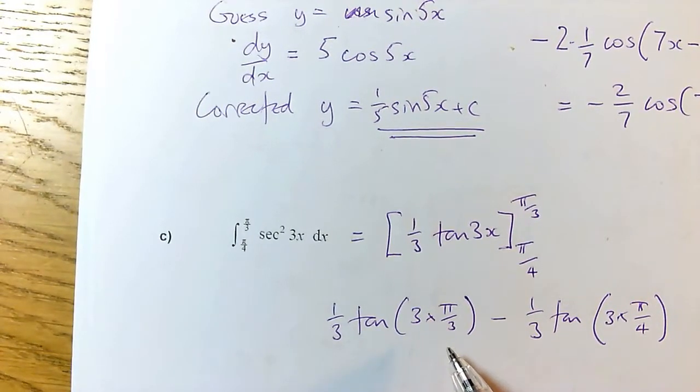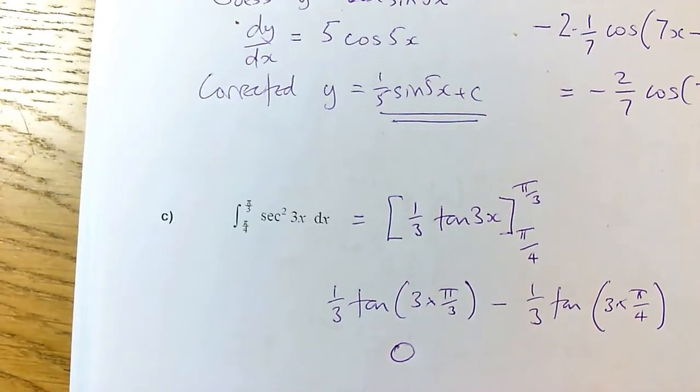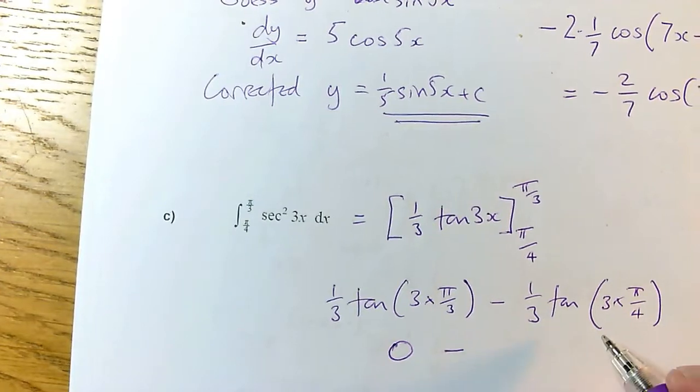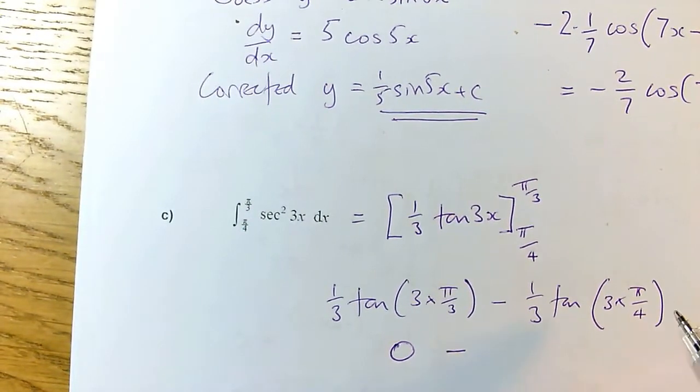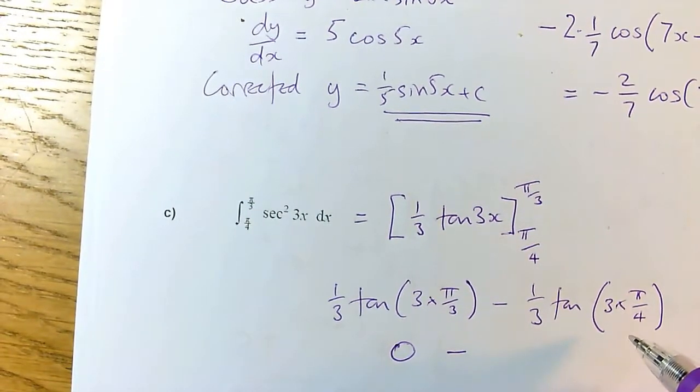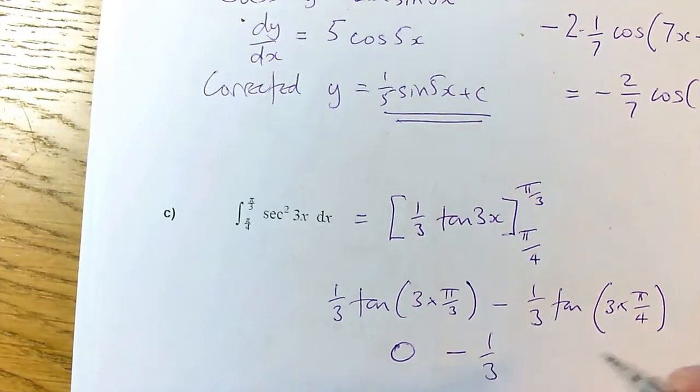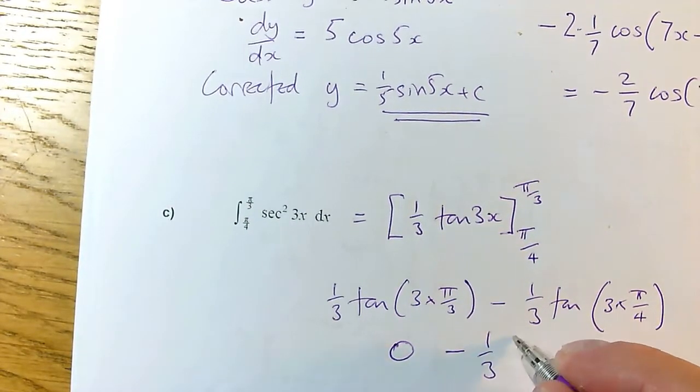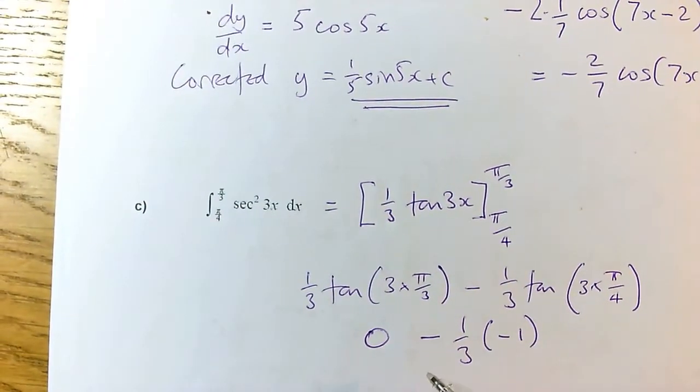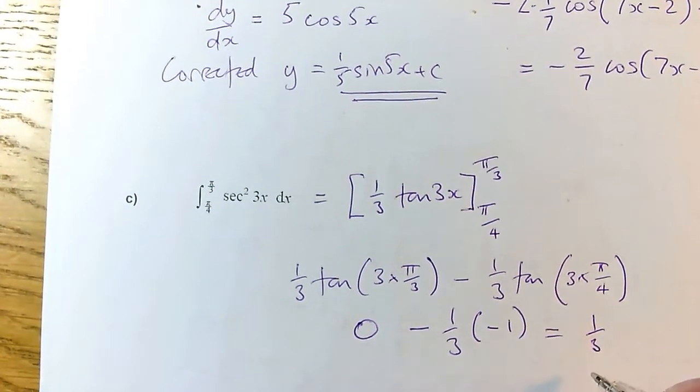Now these actually end up both being very nice angles. 3 times pi by 3 is pi, the equivalent of 180 degrees, which actually has a tan of 0. And this one here, a third tan of 3 pi by 4, the tan of 3 pi by 4 is the same as the tan of minus pi by 4 because it's a distance pi away. So this actually is minus a third. Tan of minus pi by 4 is minus 1. And of course you could do this on your calculator. So 0 take away minus, take away a third times minus 1, the answer is plus a third.